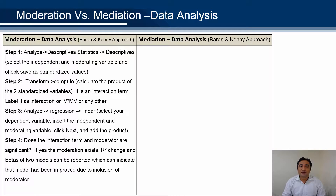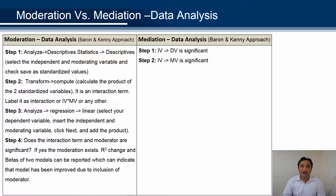Let's discuss the steps involved in mediation. Since mediation lies in theory, we have to prove that IV, DV, and MV are significant. In step one, the relationship between the independent variable and dependent variable should be significant. In step two, the relationship between the independent variable and mediating variable should be significant. In step three, the relationship between the mediating variable and dependent variable should be significant.